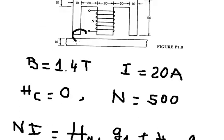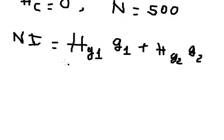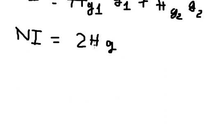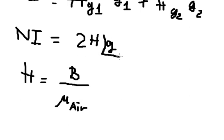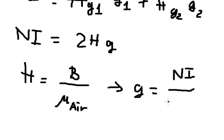Since gap one and gap two are the same, we can simplify. For H, we have the formula: H equals B divided by μ₀ (the permeability of free space). We want to find the maximum gap g, so we divide both sides by 2H, giving g equals NI divided by 2H.